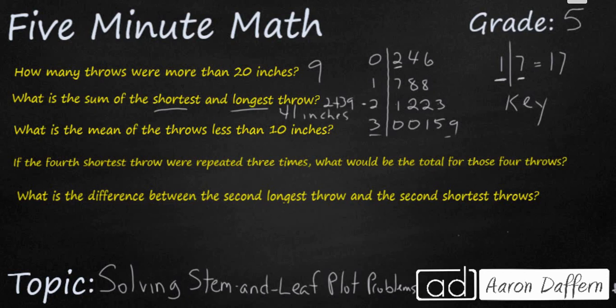What is the mean? Mean means average of the throws less than 10 inches. Well we have three throws less than 10 inches: one, two, three. So the way we calculate mean or average is you total those up. So 2 plus 4 plus 6 is going to make 12, and then you divide it by how many numbers you had. So we had three numbers. So 12 over 3, 12 divided by 3, that's going to give us an average or a mean of 4 inches.